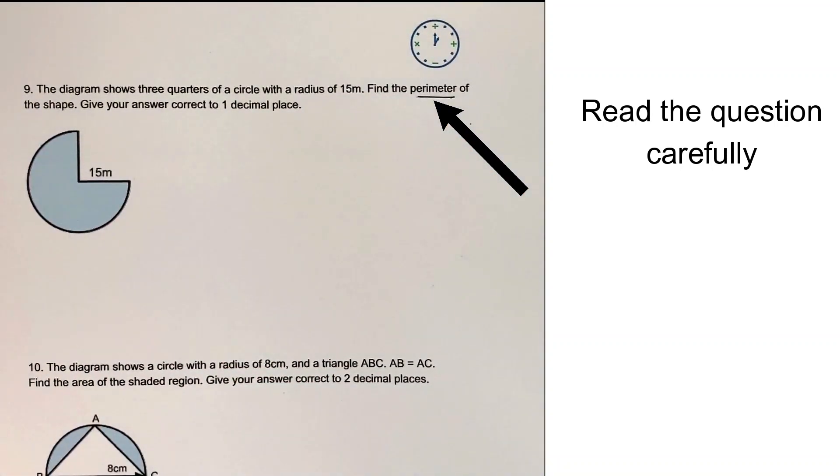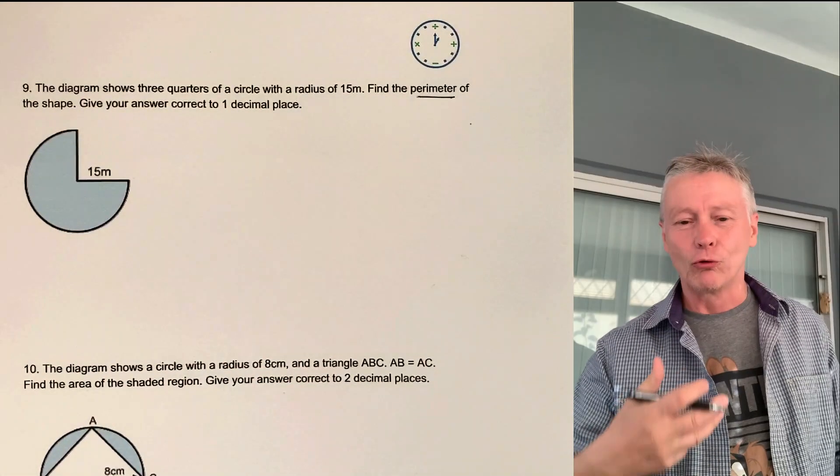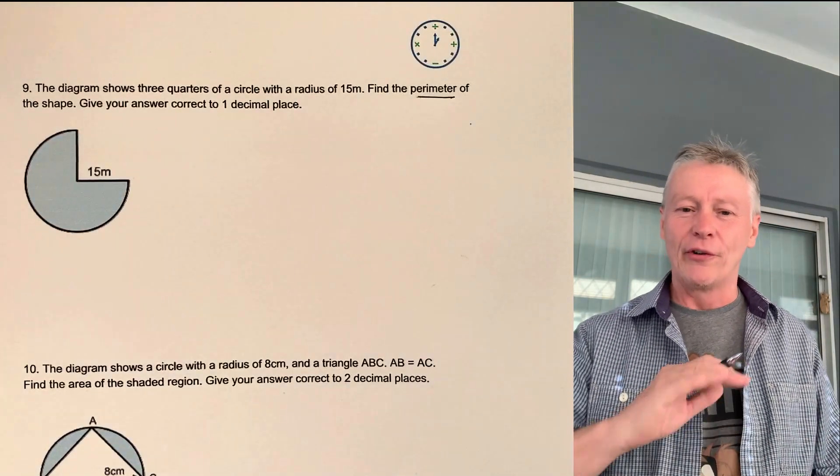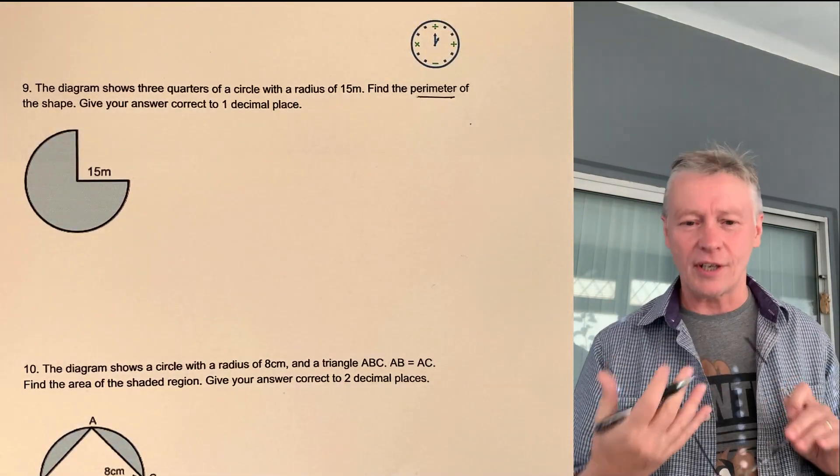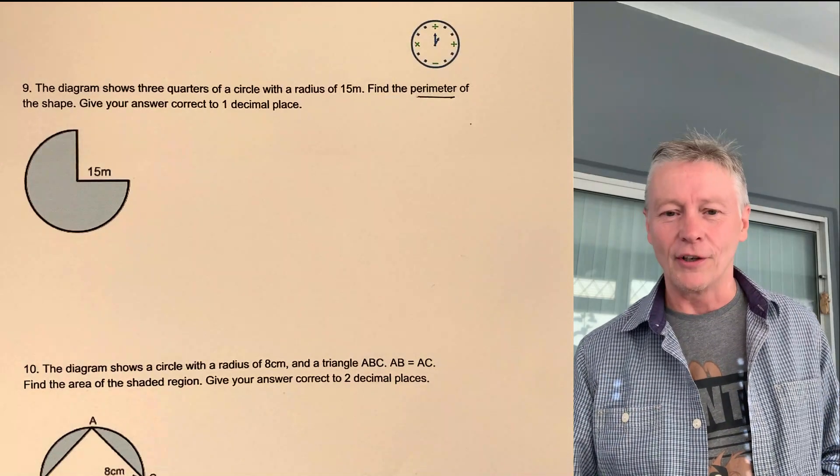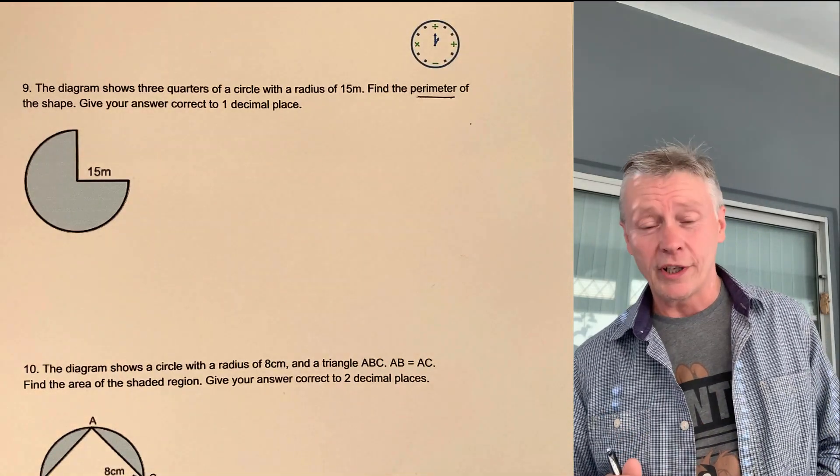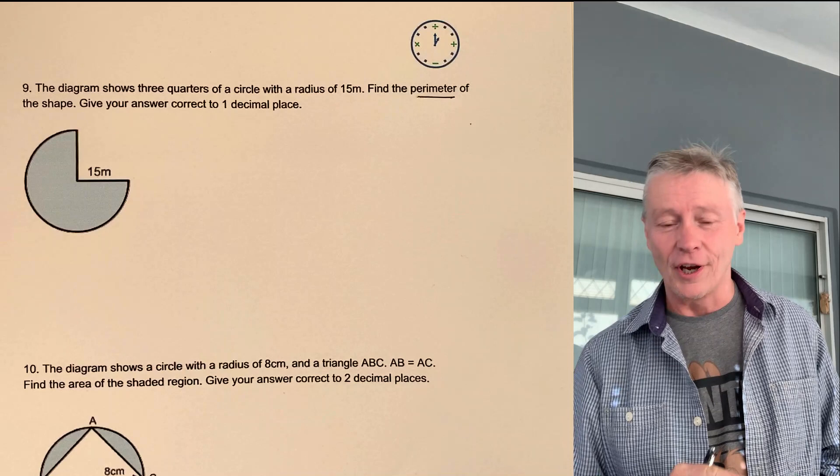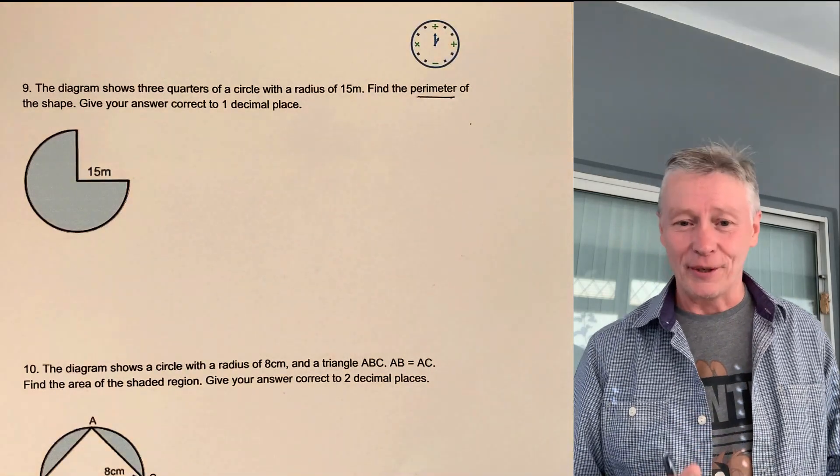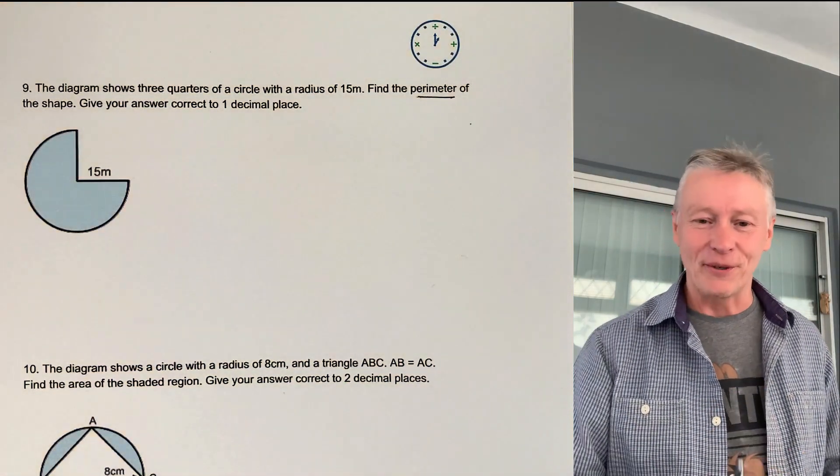So the first thing I'm going to do is write down the formula for the outside perimeter, or they call it the circumference of a circle. And from there, we can work out if it was a whole circle, but then we're only actually going to be using three-quarters of it. You'll see what I mean in the video.